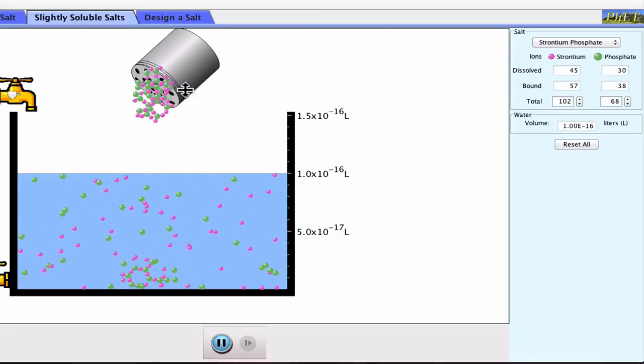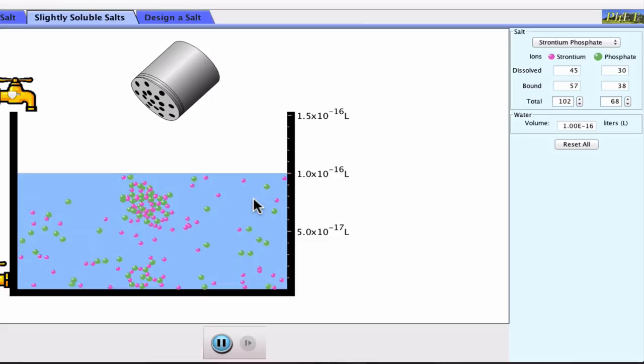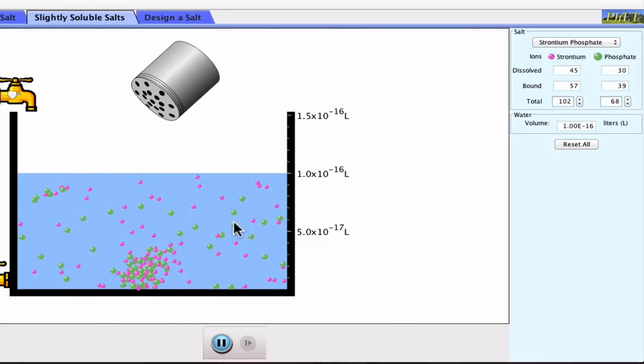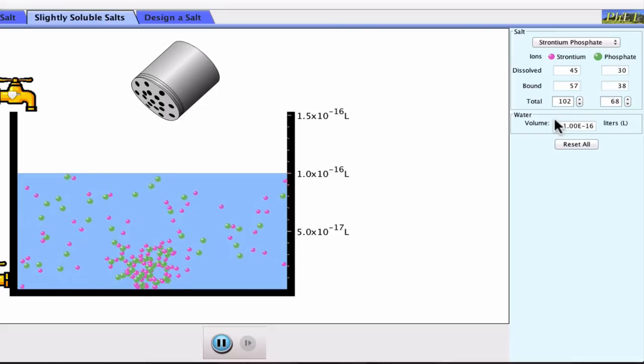If I add a little bit more strontium phosphate to this, you'll notice that that solid, for the most part, just sits there. There's a solid mass of undissolved strontium phosphate. Eventually, the numbers of dissolved ions and the numbers of ions we find within the solid in the so-called bound state come to be more or less constant.